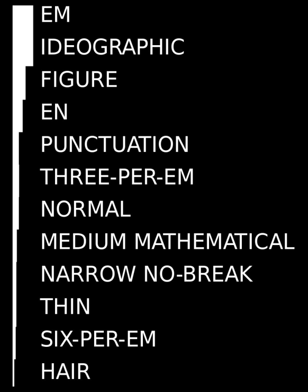In computer programming, whitespace is any character or series of characters that represent horizontal or vertical space in typography. When rendered, a whitespace character does not correspond to a visible mark, but typically does occupy an area on a page.